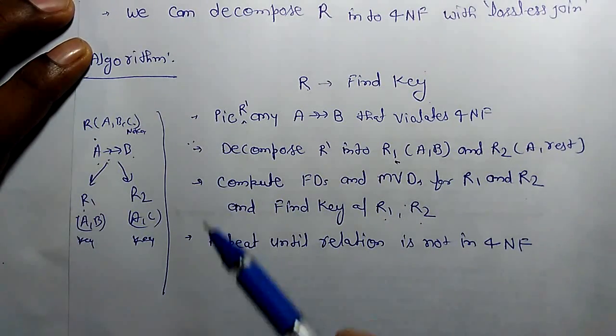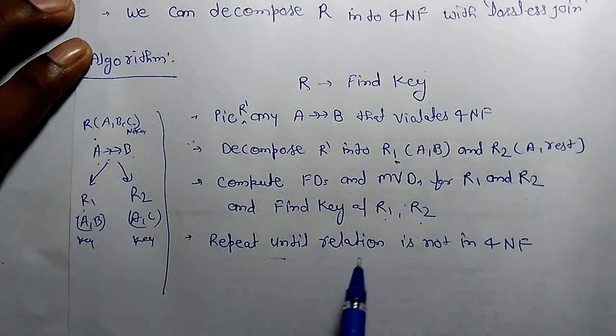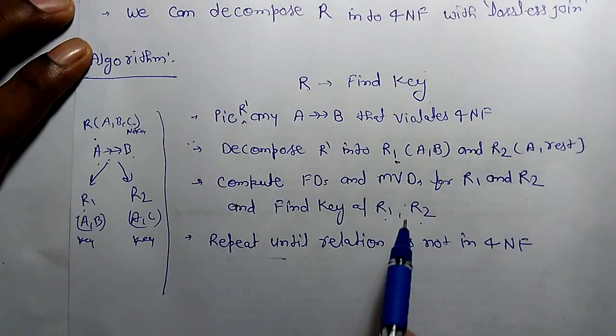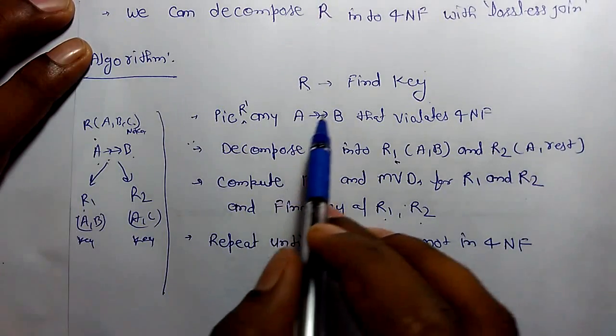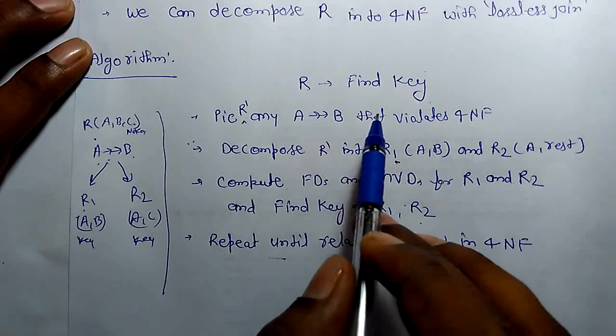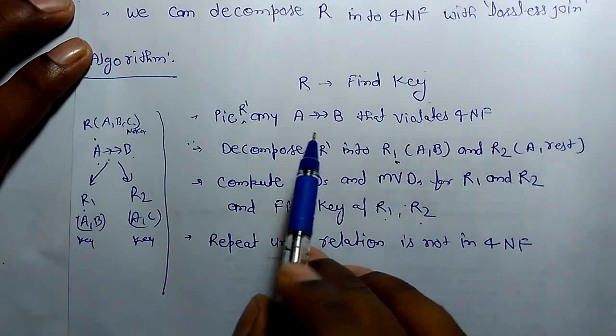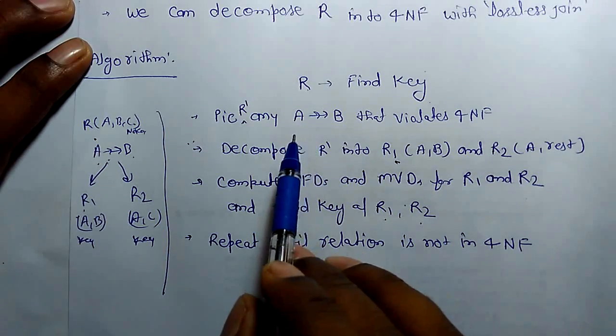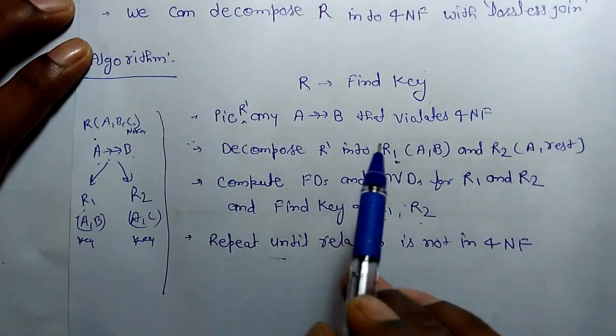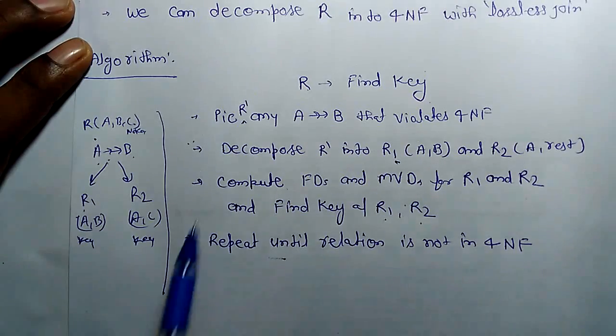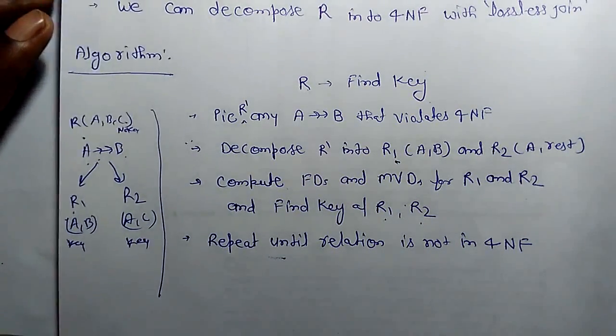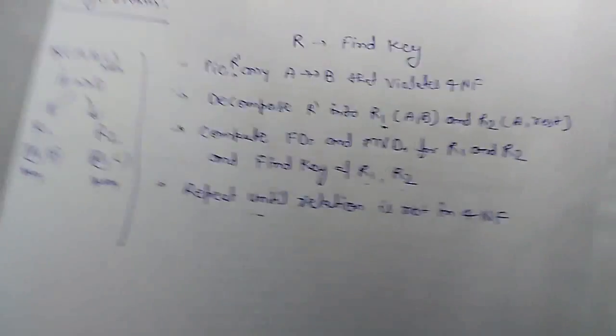We again check and repeat until the relation is not in 4NF. We will again check the functional dependency and multivalue dependency for the relation. If there is a multivalue dependency that violates the 4NF, we will again break in this procedure till all the relations would be in 4NF. Thank you.